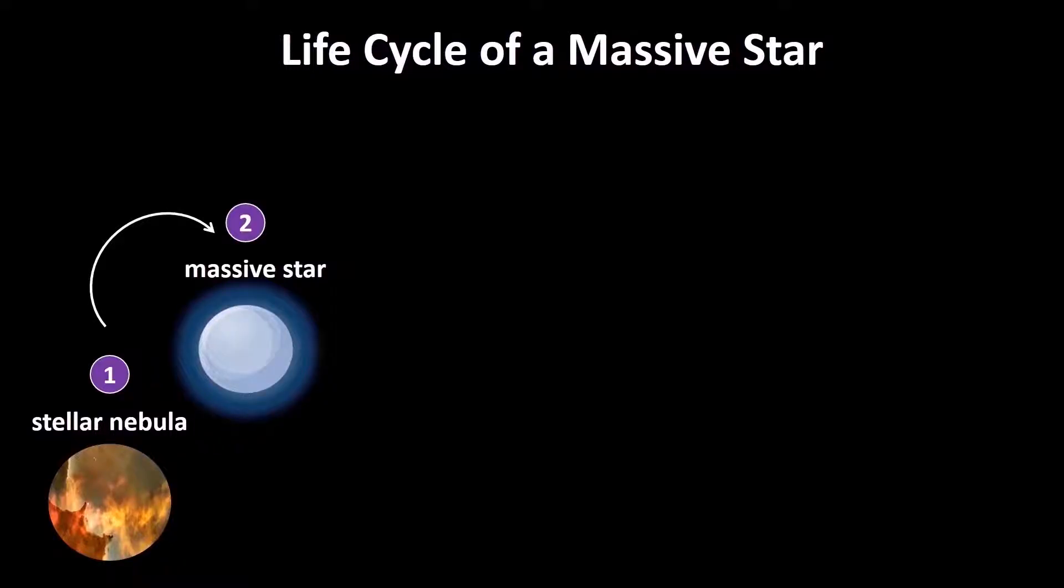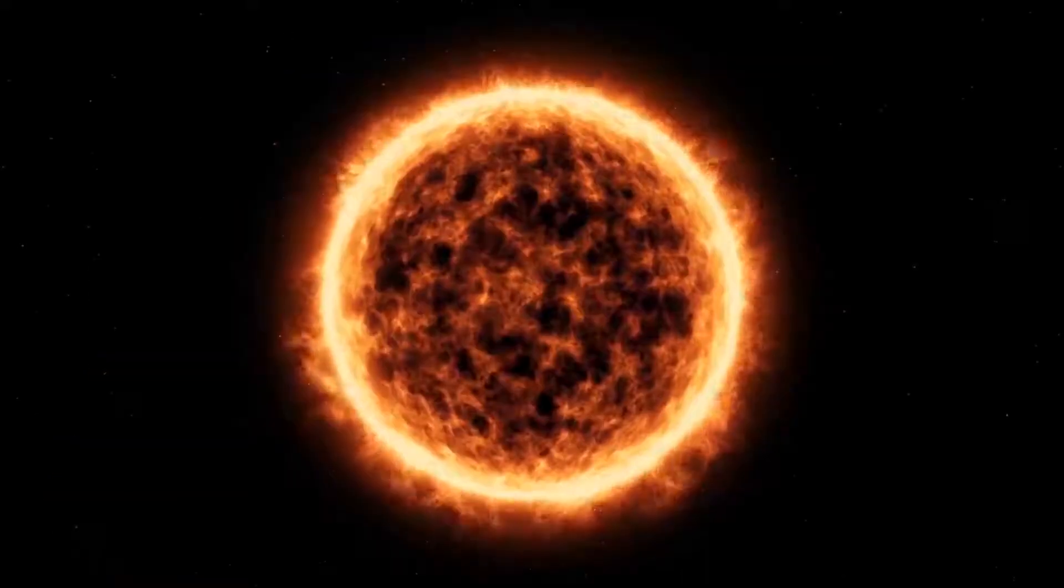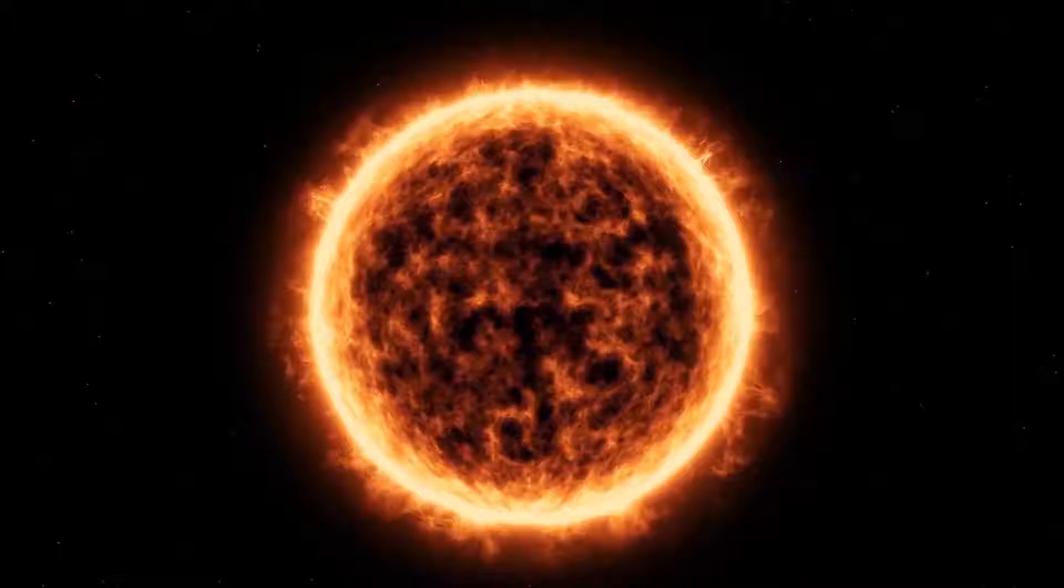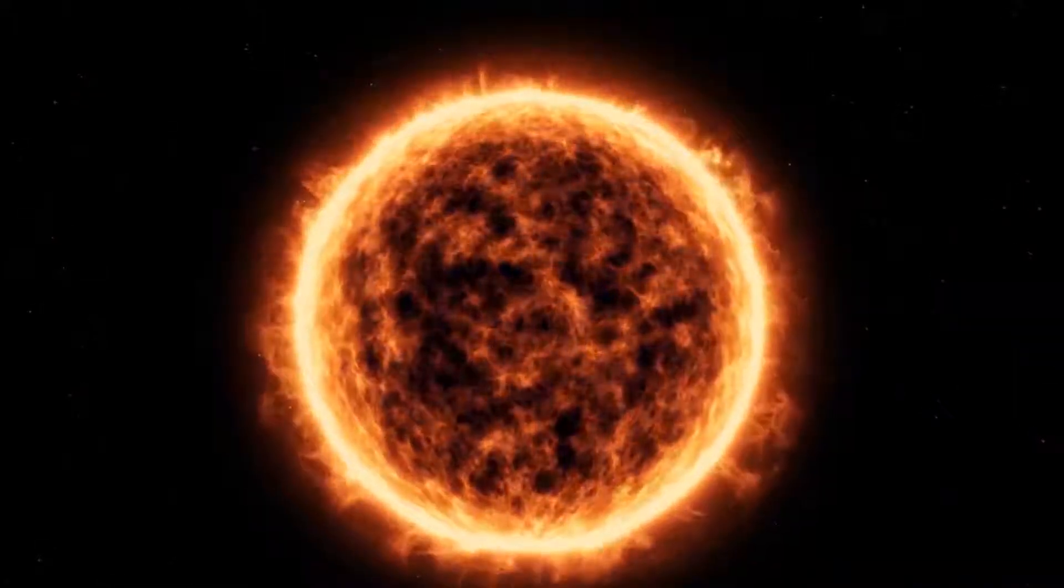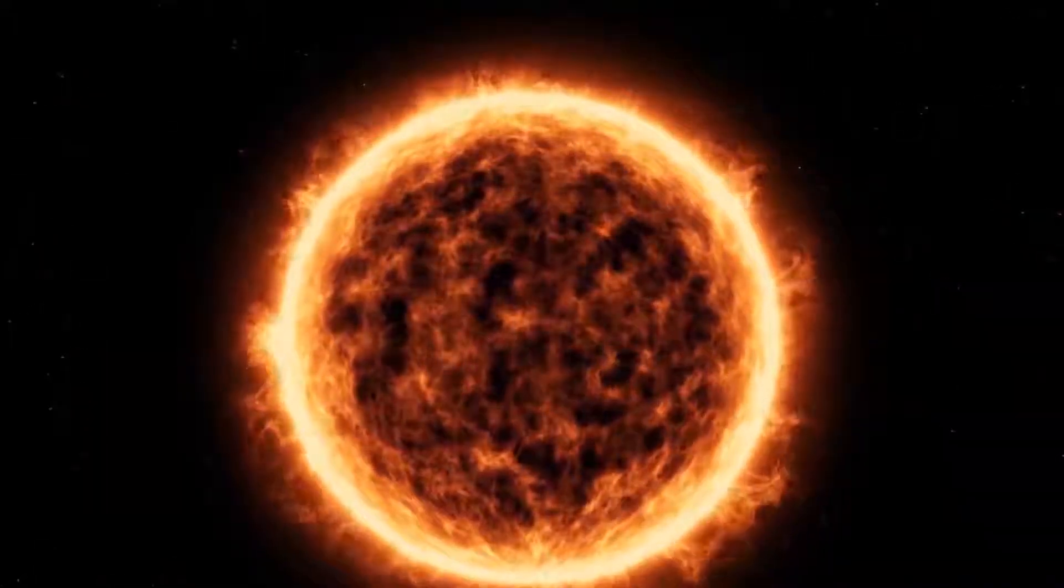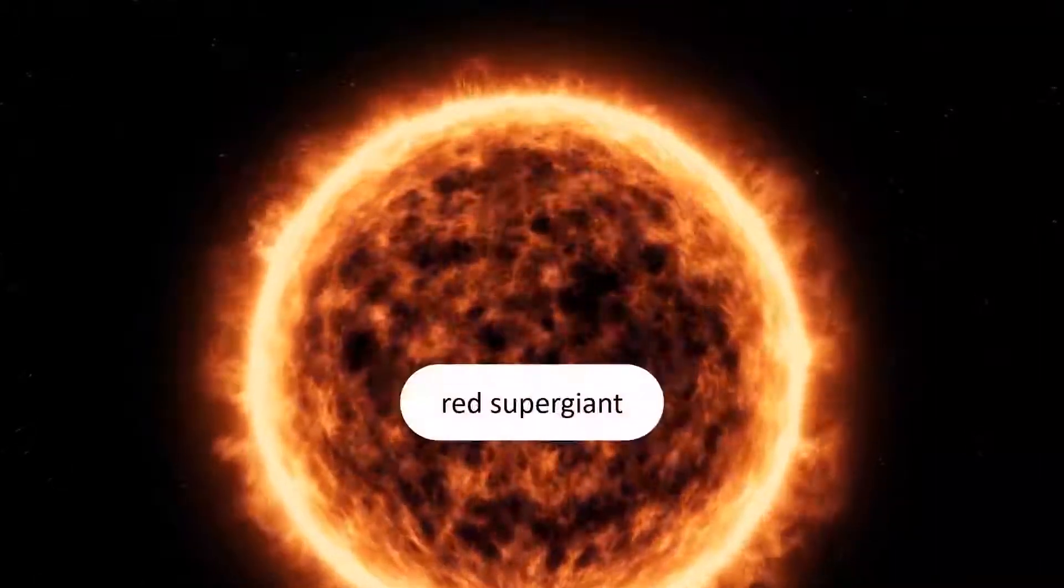Like average stars, massive stars also start out as a stellar nebula. However, their remaining life cycle is different from average stars. When the hydrogen in its core runs out, a massive star increases in size and turns into a red supergiant.